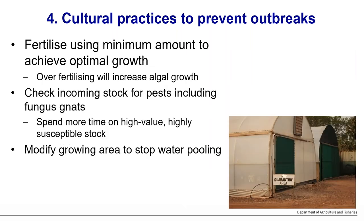Fertilize the minimum amount needed to achieve optimal growth — over-fertilizing encourages algal growth and serves no purpose if the plant can't use it. Check incoming stock for pests including fungus gnats, and spend more time on high-value, highly susceptible crops. If purchasing from a supplier with variable stock quality, hold plants a little longer and check them more thoroughly before introducing them to your main growing area. Modify your growing area to stop water pooling.